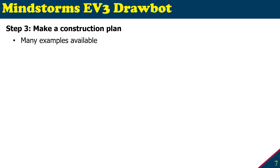To make a construction plan for your drawbot, the easiest way is to look at drawbots already made by other students or users — the following slides show one example. There are also many examples available on the web and on YouTube. A good idea is to view those drawbots to generate your own ideas about what mechanism you want to build. Search for drawbots using Mindstorms EV3 online for brainstorming.